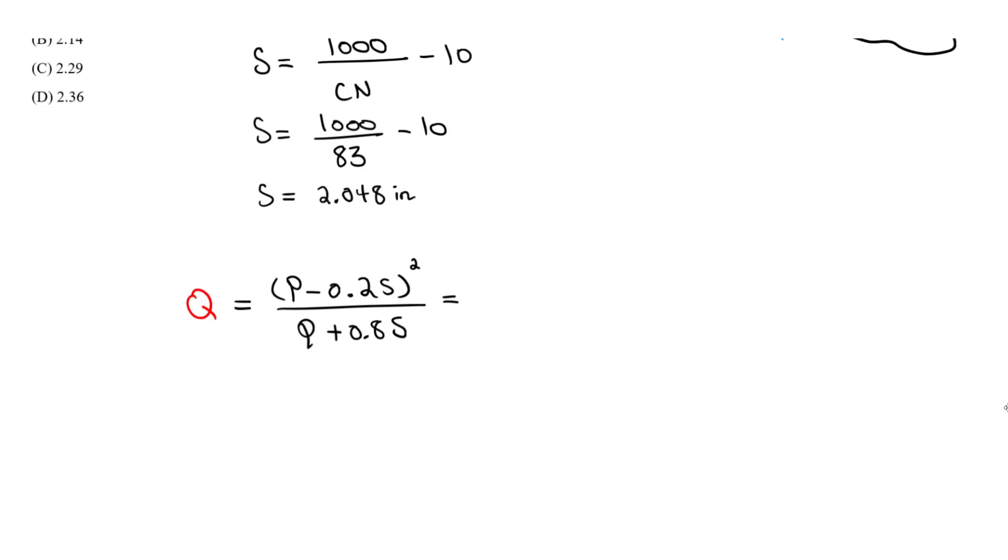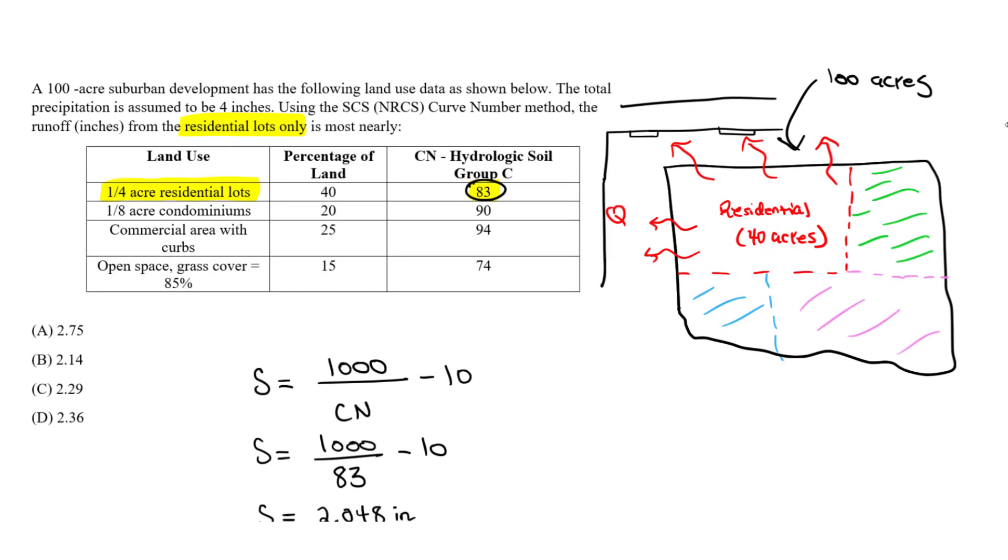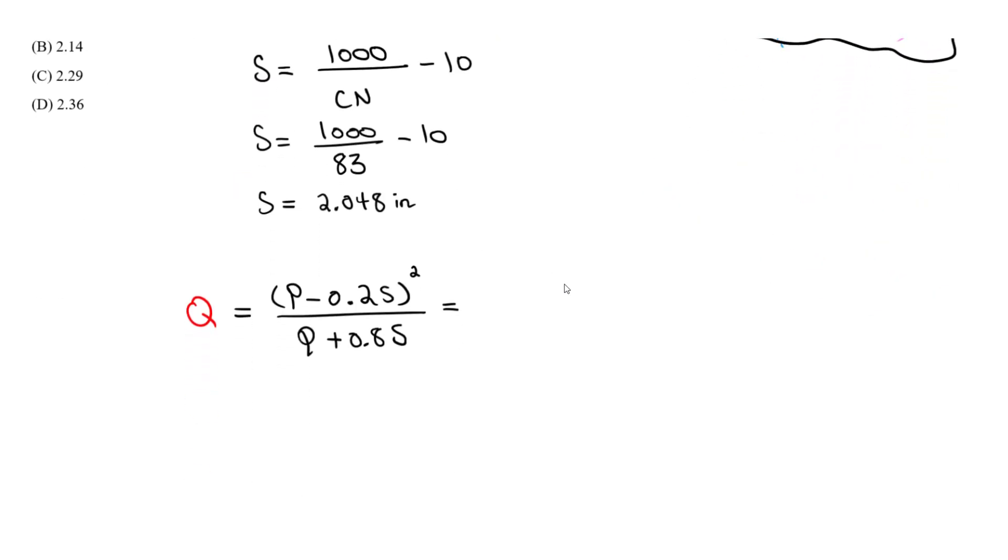So we plug in our P value, which is given in the question to be 4 inches. It's right here, our precipitation is 4 inches. So this is going to be 4 - 0.2, our S value we just determined, it's 2.048 inches. And don't forget to square all of that in parentheses, divided by our P value, which is the 4 inches, plus 0.8, and we multiply by the S value, which is 2.048 inches.